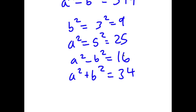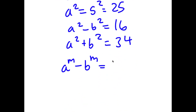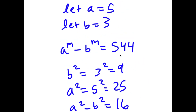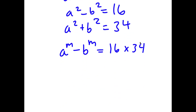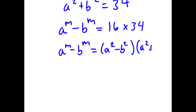By knowing this, we can say that a to the power of m minus b to the power of m equals 16 times 34, because 544 equals 16 times 34. And a squared minus b squared is 16, and a squared plus b squared is 34. So I'm going to rewrite this as a to the power of m minus b to the power of m equals a squared minus b squared times a squared plus b squared.